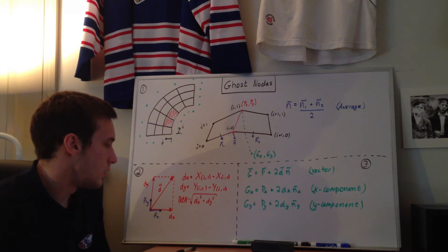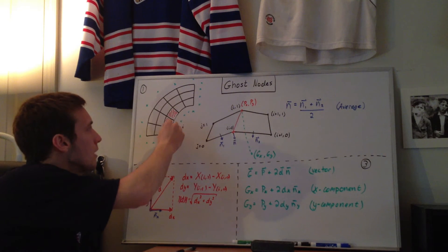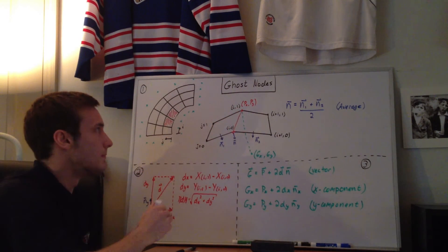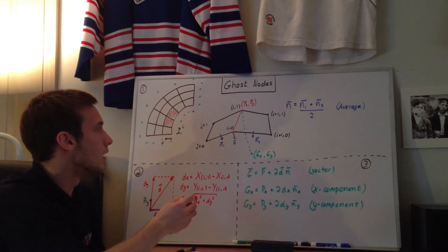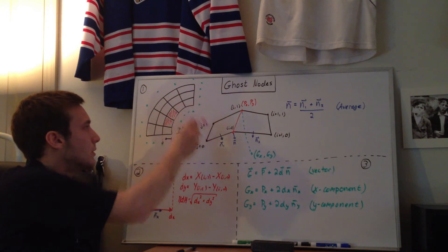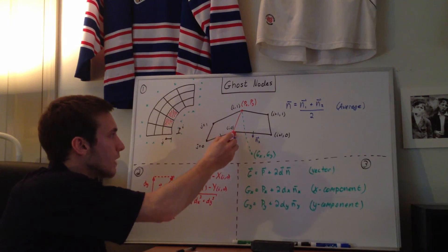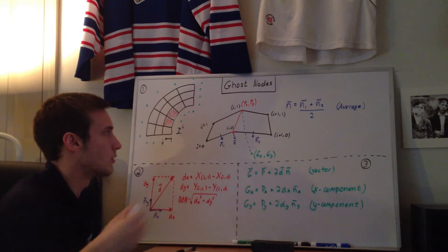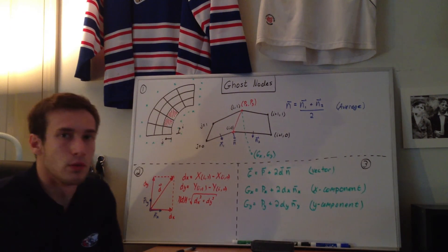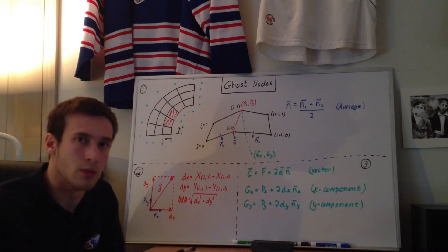And that gives you the locations of the ghost nodes. I only did it for this one boundary here, but you would have to do it for the other boundaries as well, which would change your indices. If I were going to loop along this boundary, I would first need to find the average normals for that point, and then calculate where the actual ghost nodes are. You just do that for every single boundary, and then you have your full set of ghost nodes, which you can use for metrics, boundary conditions, or the equations — whatever you want to use them for.